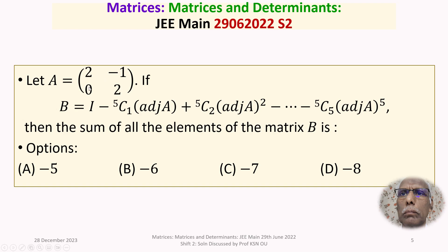We are given the 2 by 2 matrix A with first row [2, -1] and second row [0, 2]. B is equal to I minus 5C1 into adjoint of A, plus 5C2 into adjoint of A squared, and so on, minus 5C5 into adjoint of A to the power of 5. We are required to find the sum of all the elements of matrix B.